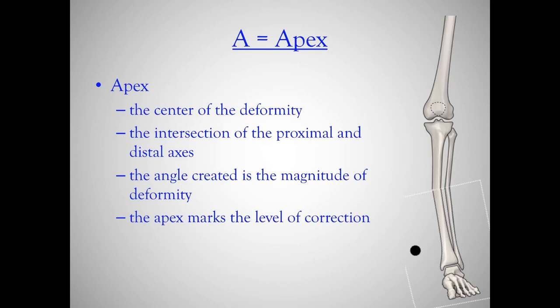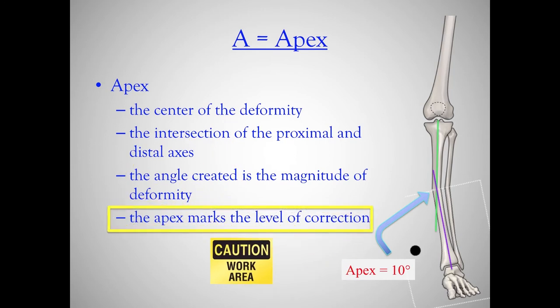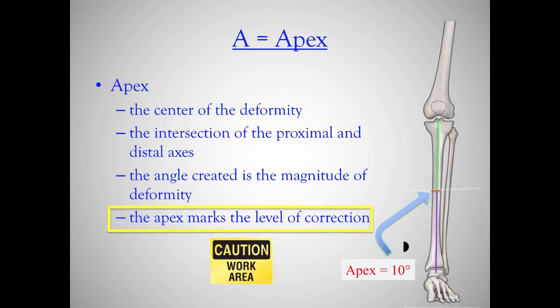Let's talk about the apex. The apex is the center of the deformity and it's found at the intersection of the proximal and distal axis. The angle created is the magnitude of the deformity — 10 degrees in this example. The apex marks the level of correction. This is where you want to work, where you want to create your bone cut to get perfect alignment of both the bony margins and the axis.